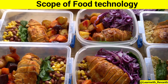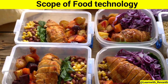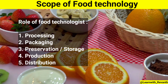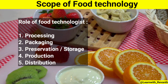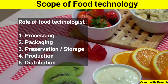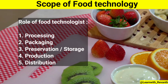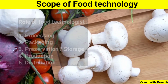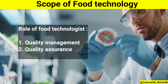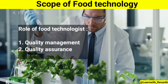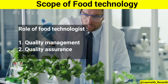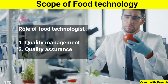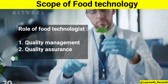What is the role of food technology? For example: processing, packaging, preservation and storage, production and distribution. There are also roles like quality management and quality assurance. Lots of issues from food production companies are worked with.